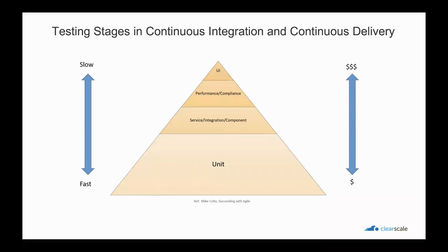Performance and compliance tests are the next level — they require production-quality environments and are more expensive. UI and user acceptance tests are at the top of the pyramid and also require production-quality environments. All of these tests are part of the complete strategy to assure high-quality software. However, for speed of development, the emphasis is on the number of tests and coverage at the bottom half of the pyramid.